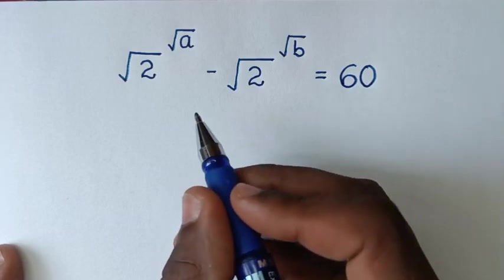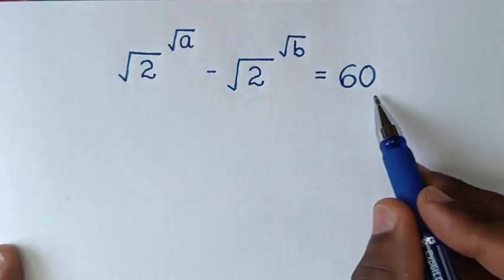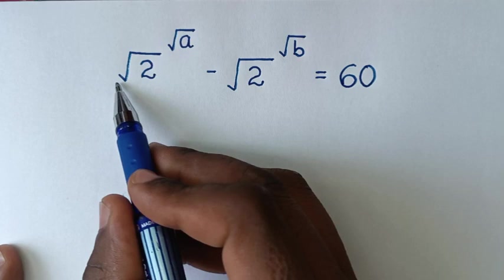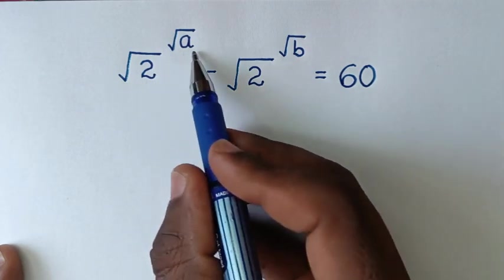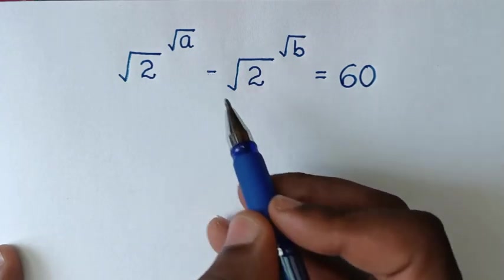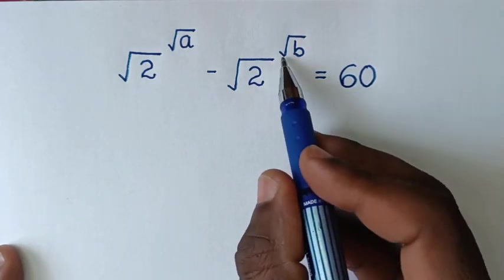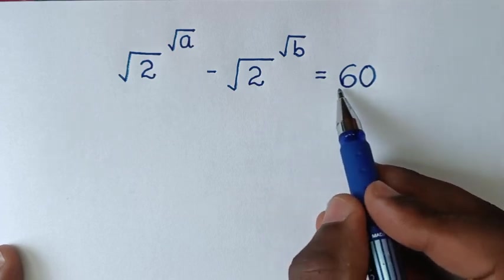Hello, you are welcome to solve this math problem, which is square root of 2 power of square root of a, minus square root of 2 power of square root of b, is equal to 60.